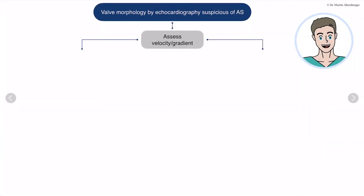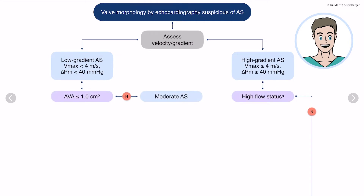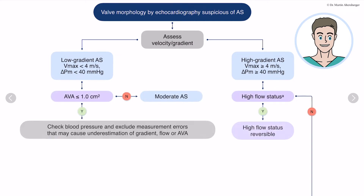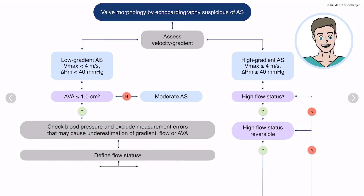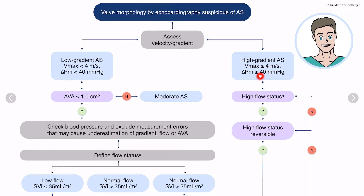Now let's go to the guidelines. What does the newest guidelines of 2021 tell us about valve morphology with echocardiography suspicious of aortic stenosis? Initially we have to assess the gradients. On the right side, if we have a high-gradient aortic stenosis with a high flow velocity of 4 meters per second and a mean pressure gradient above 40 mmHg and a normal flow status, we have a true severe aortic stenosis.